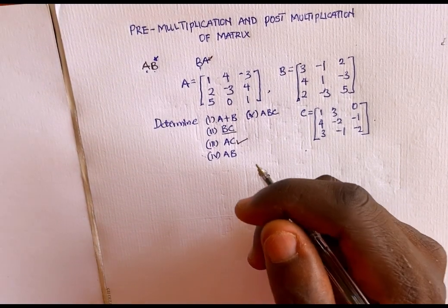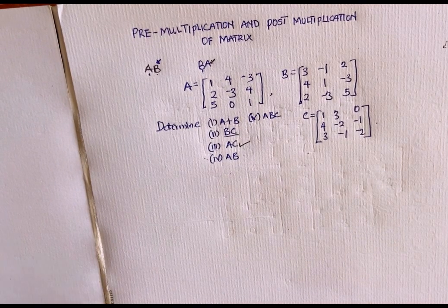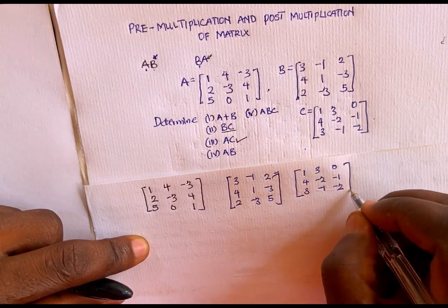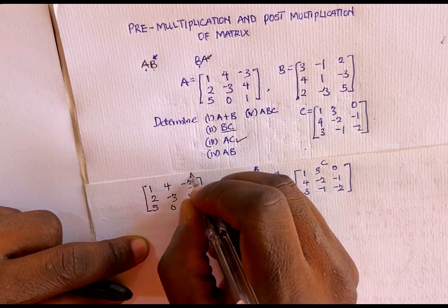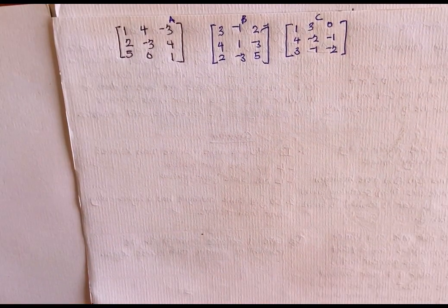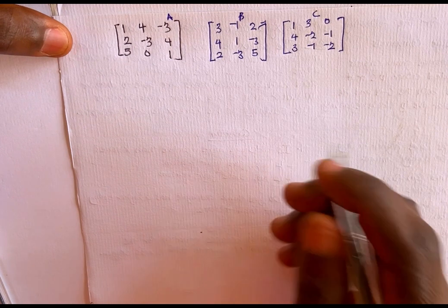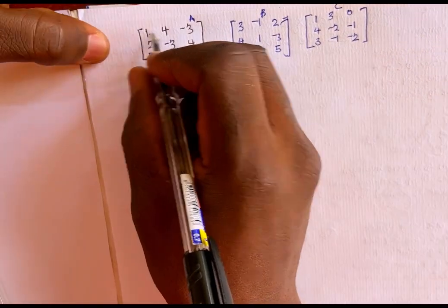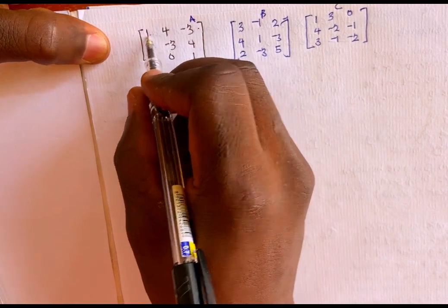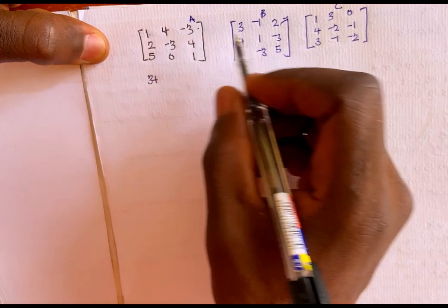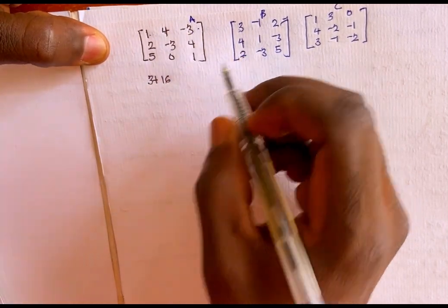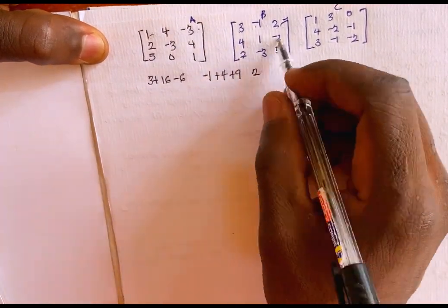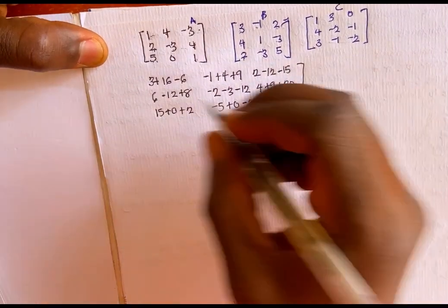For AC, matrix C is pre-multiplied by matrix A. If we had CA, matrix C would be post-multiplied by matrix A. Now let's find AB first, following the same method. I'll multiply each row of A by each column of B: 1×3 + 4×4 + (-3)×2 = 3 + 16 - 6, and 1×(-1) continues the process.